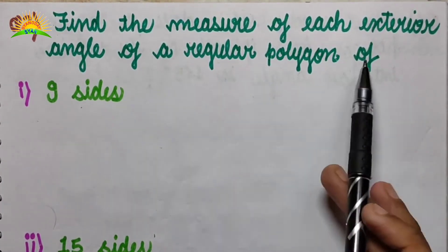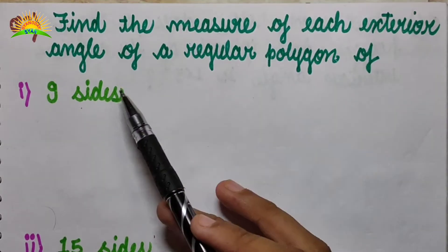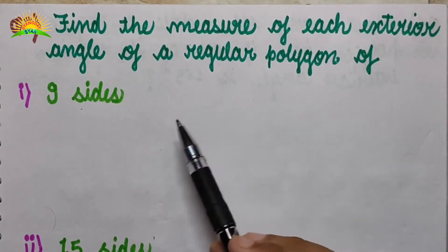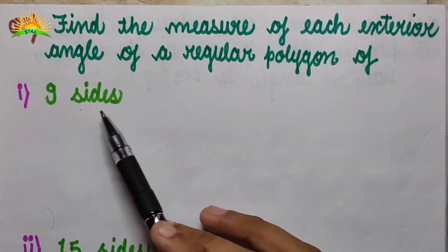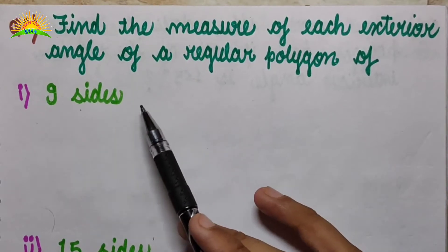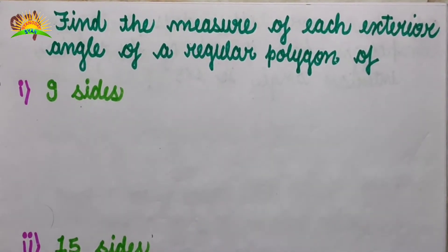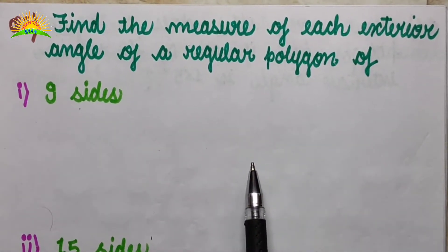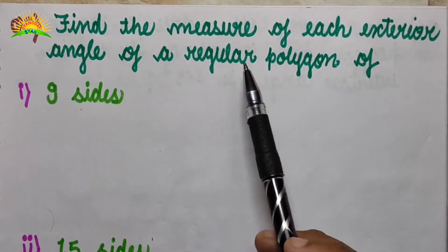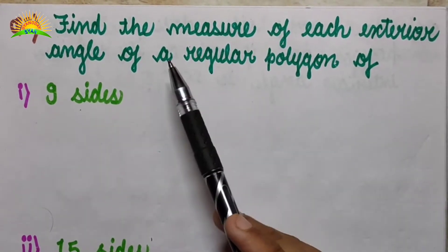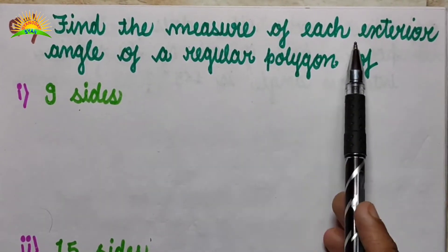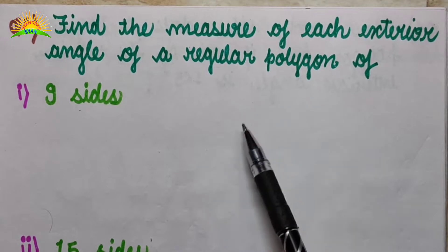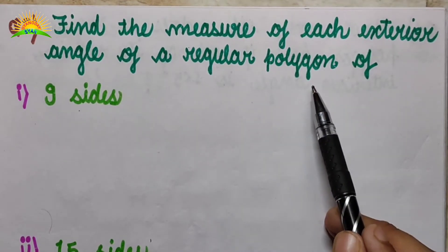Today we are going to start question number 2: Find the measure of each exterior angle of a regular polygon. The first part has 9 sides and the second part has 15 sides. We have to find each exterior angle of a regular polygon.